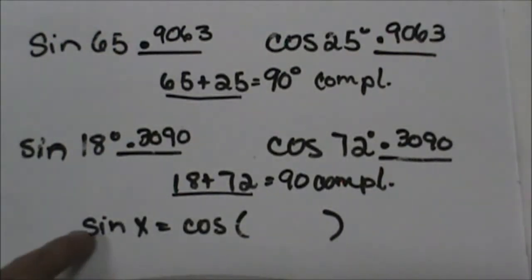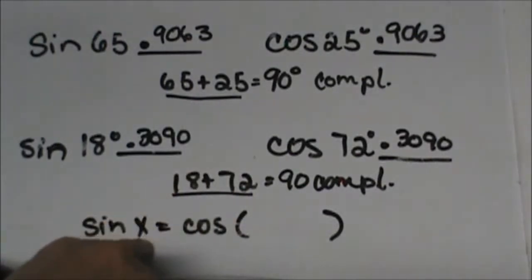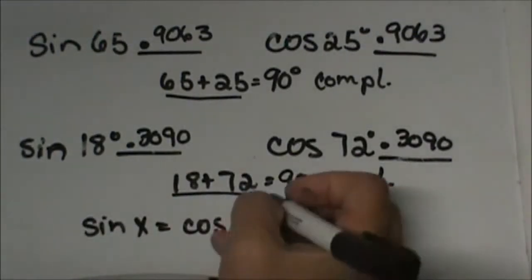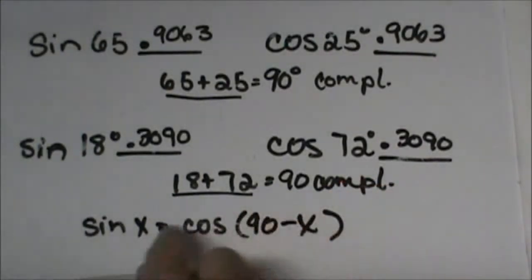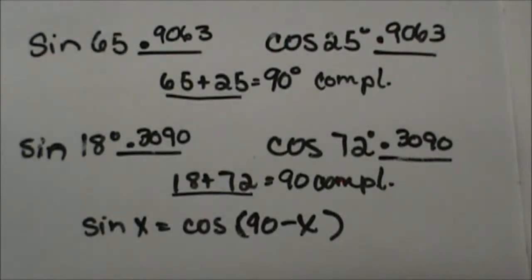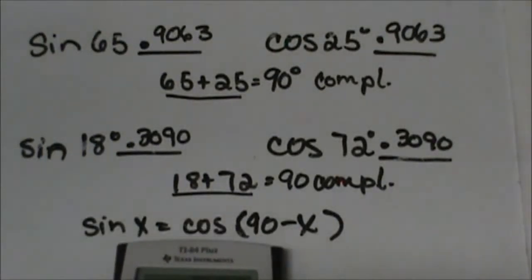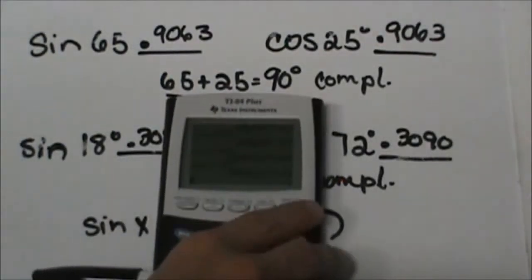So let's make up a little rule. If the sine of x would equal the cosine of what? Well, it's 90 minus that value, right, because it would be its complement. So whatever the value of x is, if we subtract it from 90, it will be the same as the cosine.